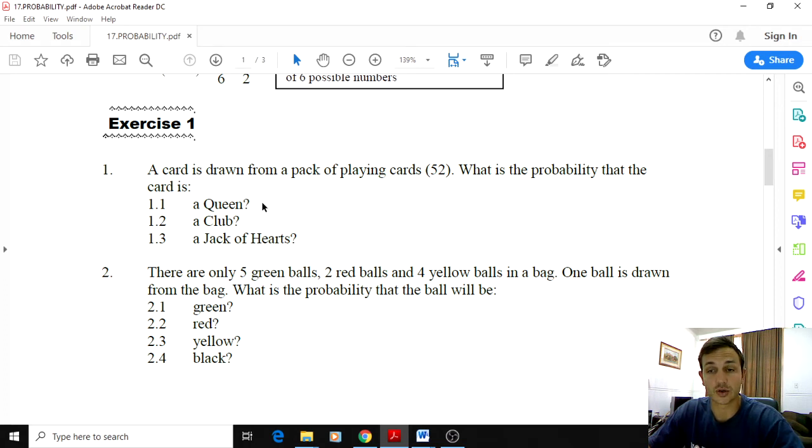So you write P in brackets queen equals four out of 52, and that is not in simplest form. In fact, it is actually going to be one over thirteen. And then a club, how many clubs are there? There are thirteen clubs, so you'll get thirteen out of 52, which is a quarter of a pack of cards, one over four.